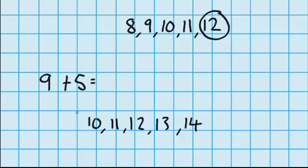And just like we did last time, let's just check that we did move up five. One, two, three, four, five. Yes, we were right. So nine plus five must equal 14.